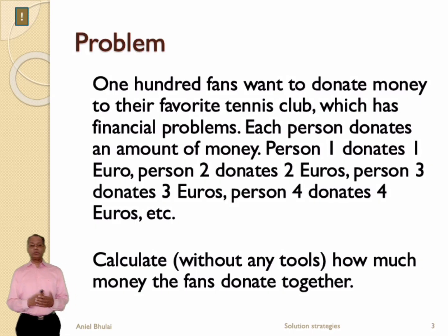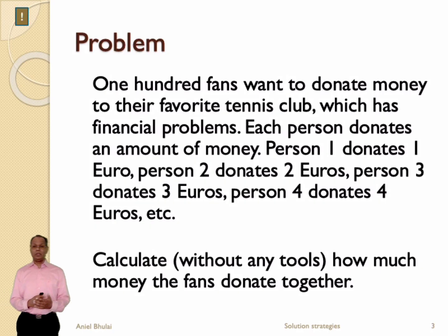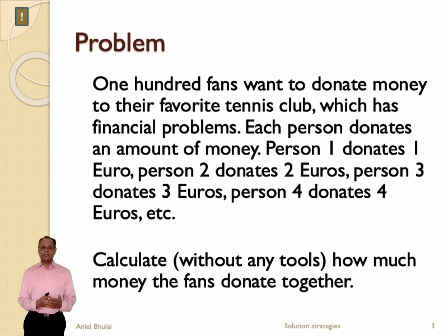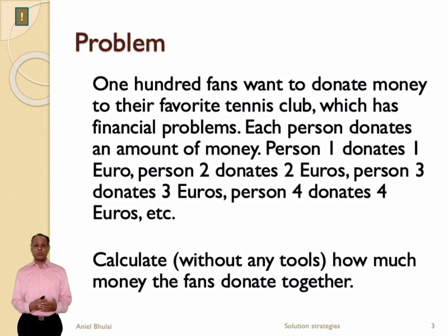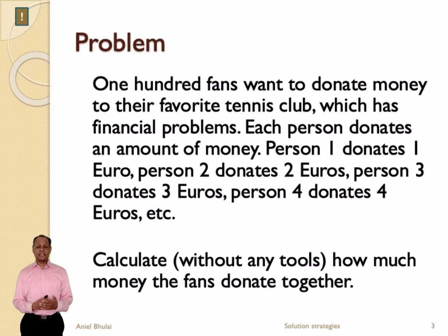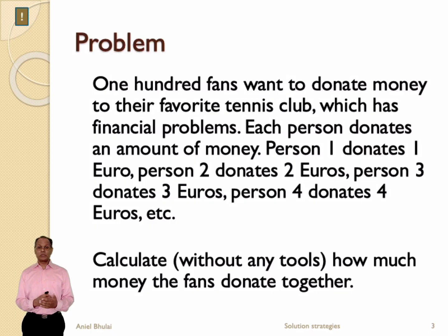Now the question is how much money do the fans donate together? To solve this problem we could sum up all the donated euros of the 100 members. Well this is an easy solution, but it is time-consuming and not efficient. And what if we would have 1000 members or maybe 1 million members instead of 100? Would you still use the same solution strategy? I think it is obvious that we should look for another solution strategy to solve this problem more efficiently.